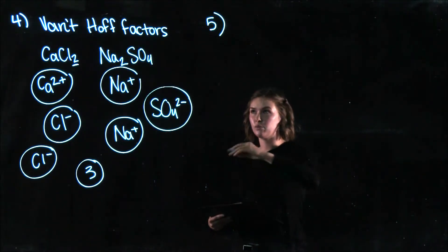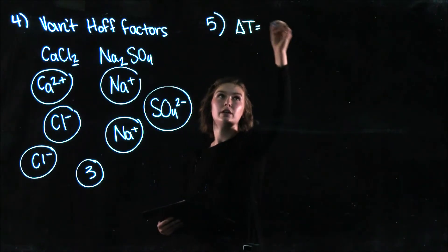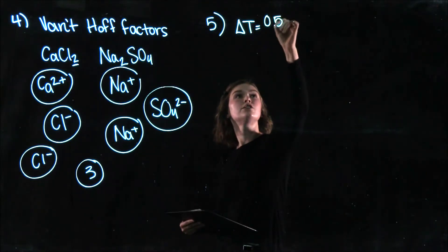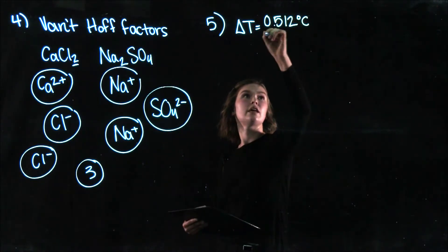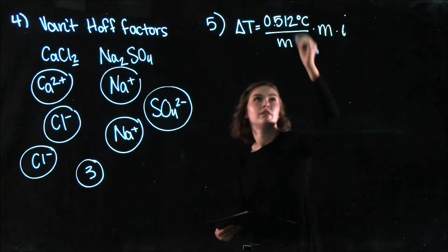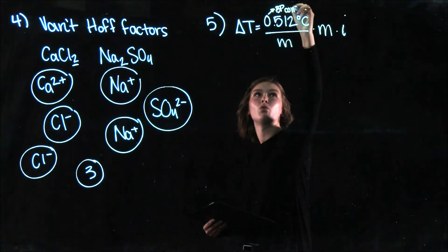So that equation is 0.512 degrees C over M times M times I. So this, this is your boiling point constant for water.